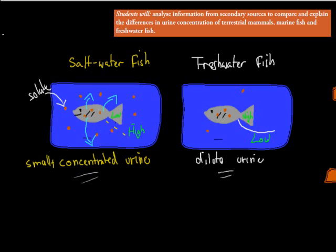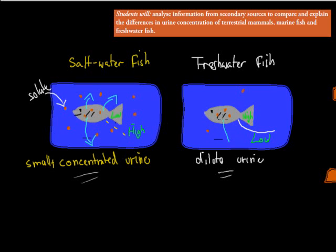A freshwater fish lives in an environment where its internal environment is more salty than the river around it. So water goes from low solute in the river into the fish. If nothing is changed, it's going to become really big and burst. To make sure that doesn't happen, these fish produce a large amount of dilute urine to get rid of all that extra water they keep absorbing from the environment.